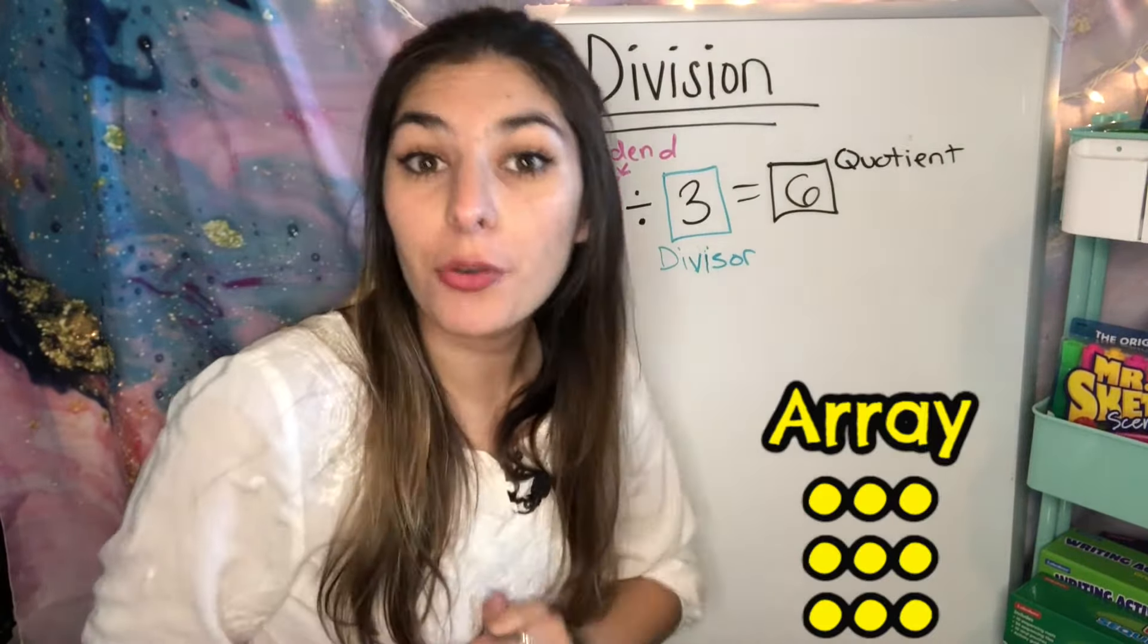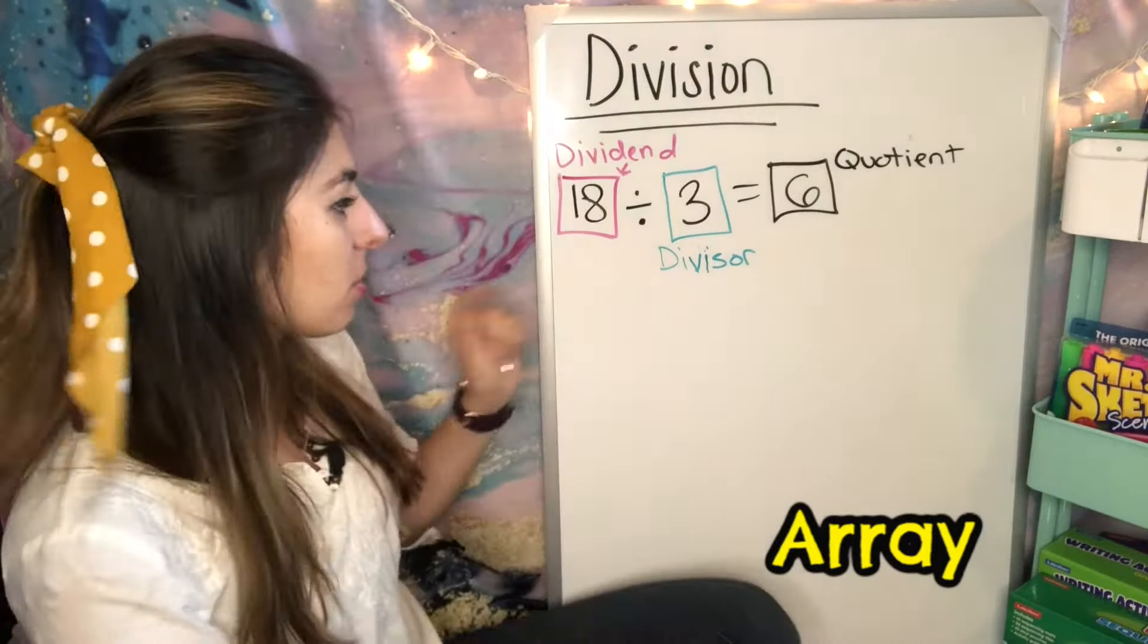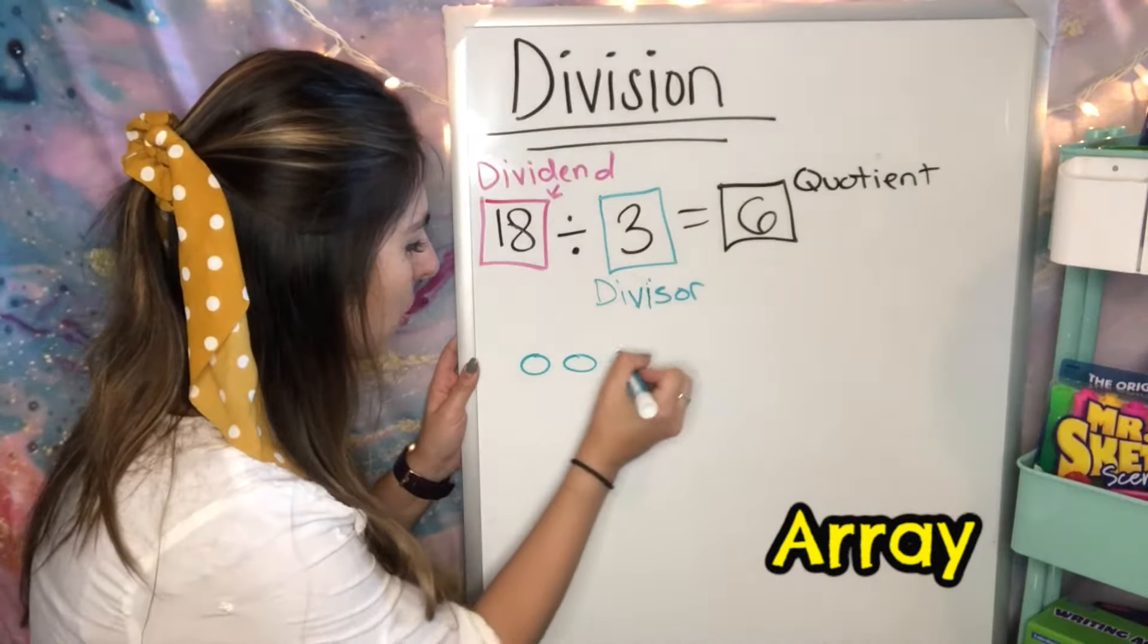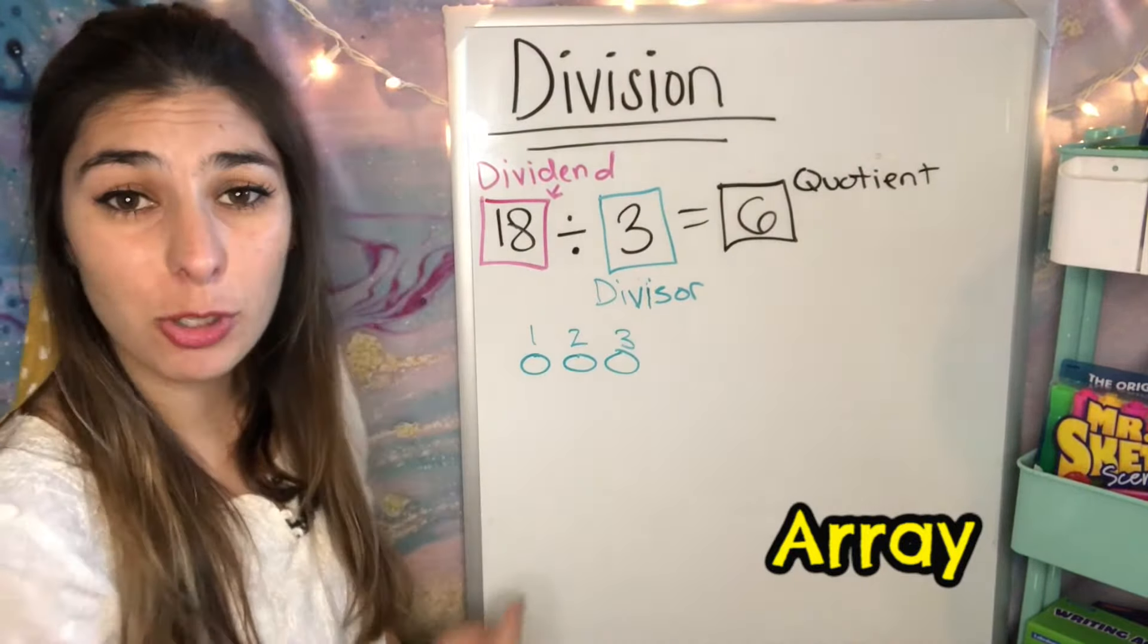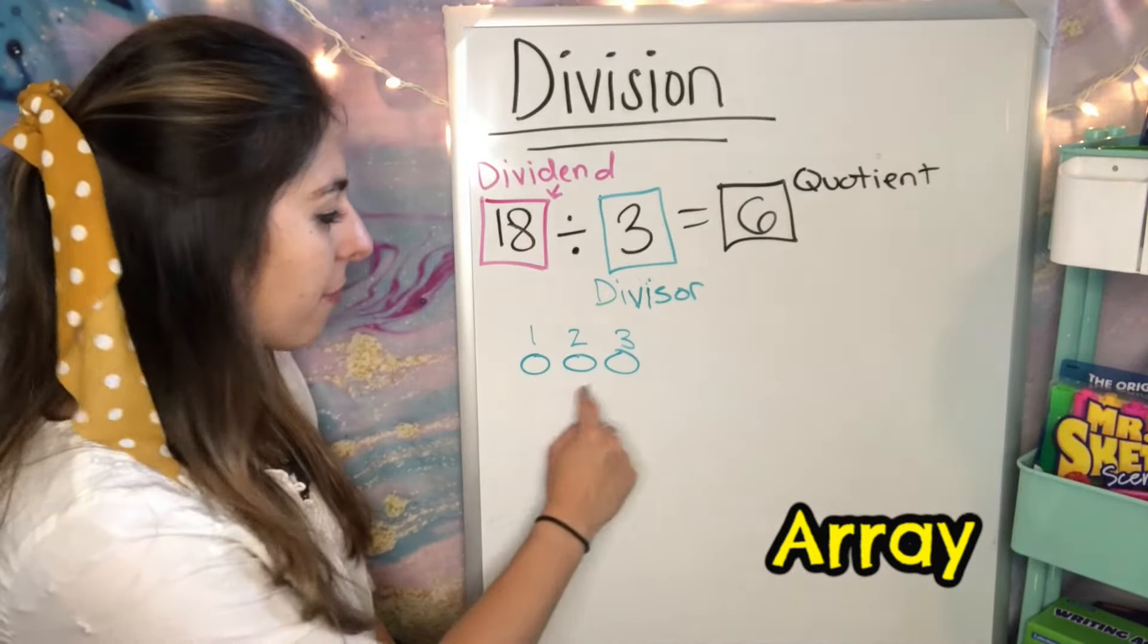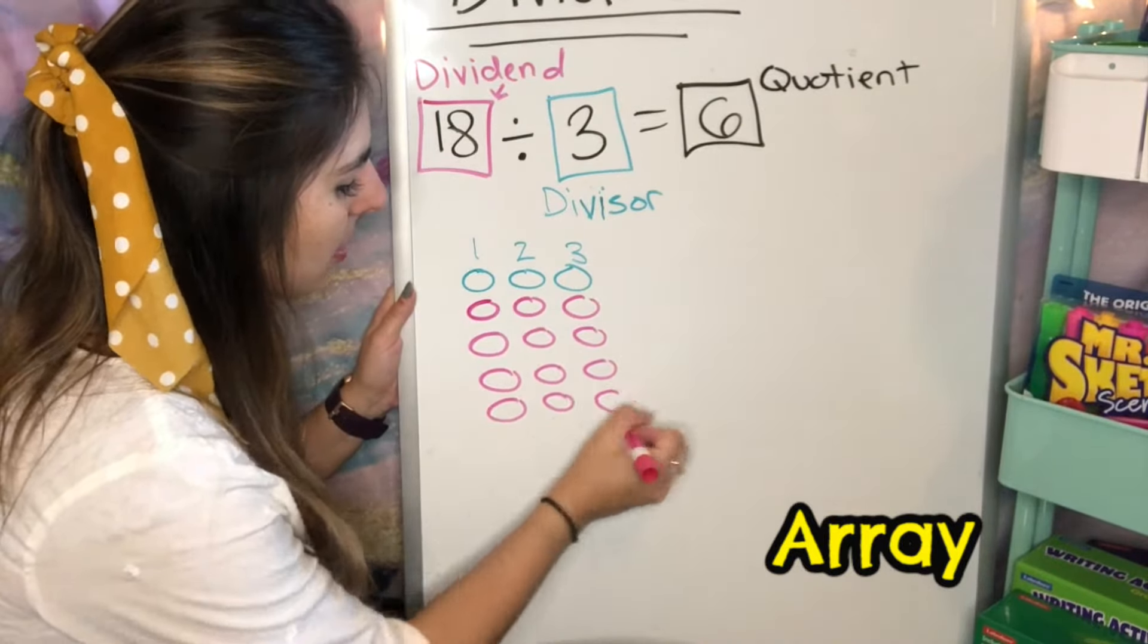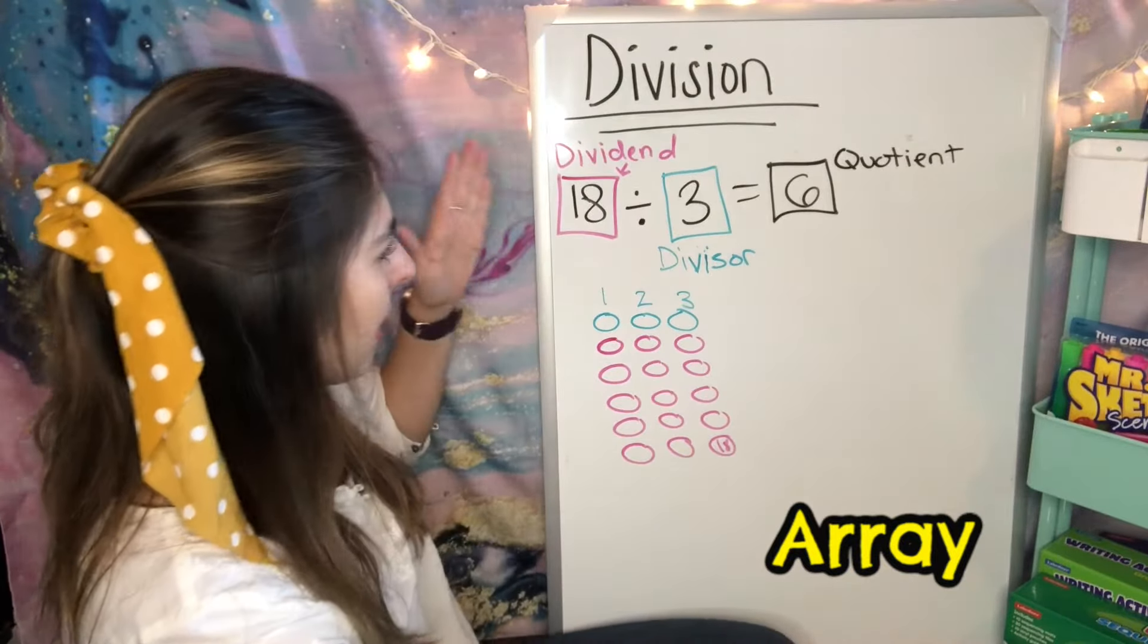Our next strategy, our array model. Again, we did this for multiplication, but it's going to be different. This time, we are going to look at our divisor again, and I see 3. So I'm going to do 3 circles. 1, 2, 3. Number them. Now, this time, instead of for multiplication I did my other set down this way, I'm just going to follow this 3 until I get to 18. 1, 2, 3, 4, 5, 6, 7, 8, 9, 10, 11, 12, 13, 14, 15, 16, 17, 18. Now that I did that, I completed all my 18.